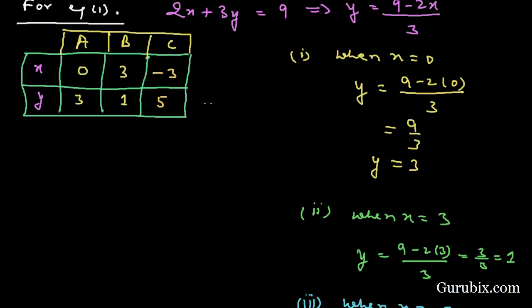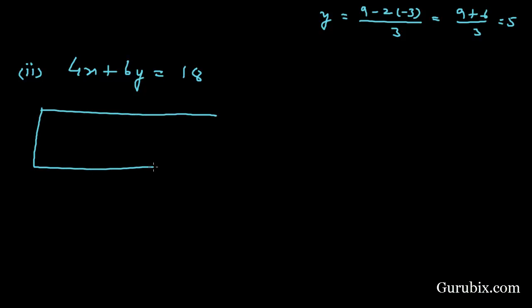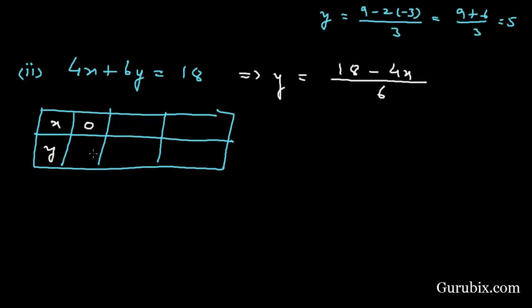Now we draw a table for equation number two: 4X + 6Y = 18, which can be rewritten as Y = (18 − 4X) / 6. If X = 0, then Y = 3; if X = 3, then Y = 1; and if X = −3, then Y = 5. These are the same solution values as equation one.